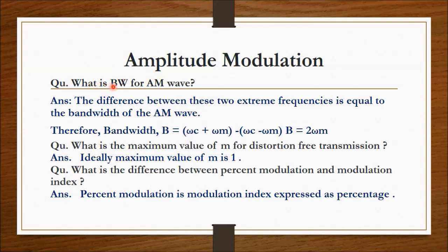The next viva question on amplitude modulation practical is: what is the bandwidth for an AM wave? The bandwidth is the difference between the two extreme frequencies. Therefore, BW = (ωc + ωm) − (ωc − ωm) = 2ωm, that is twice the modulating frequency.